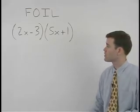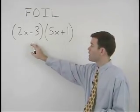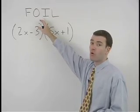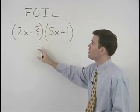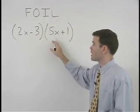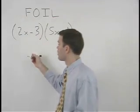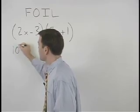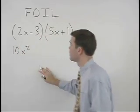So to multiply these two binomials together, let's use the FOIL method. The product of the first terms is 2x times 5x or 10x squared plus the